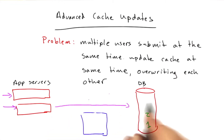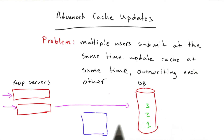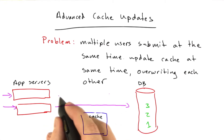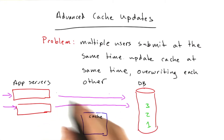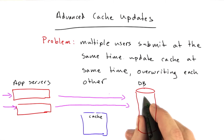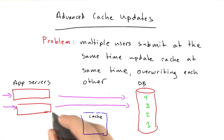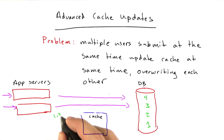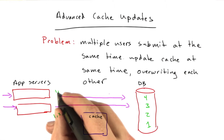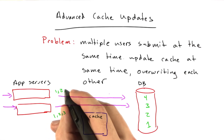This first app server inserts element 3 into the database and then wants to rerun the query so it can update the cache. But at the same time, the other app server inserts element 4 into the database and also wants to rerun the query. So each of them has a different view of the database — this first app server thinks it's 1, 2, 3, and the other thinks it's 1, 2, 3, 4.